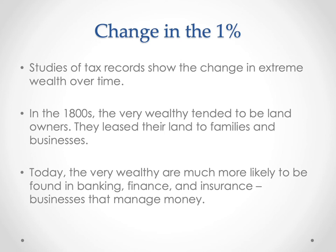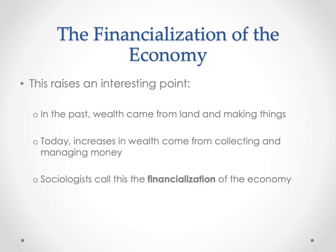When people innovate — generating new forms of banking — they generate new kinds of wealth. The wealthiest companies of the 1900s, like Standard Oil, don't even exist anymore. The wealthiest firms today are basically in Silicon Valley and Wall Street. This points overall to a financialization of the economy: in the past, wealth came primarily from landownership and from making things, but today wealth comes increasingly from collecting and managing money.